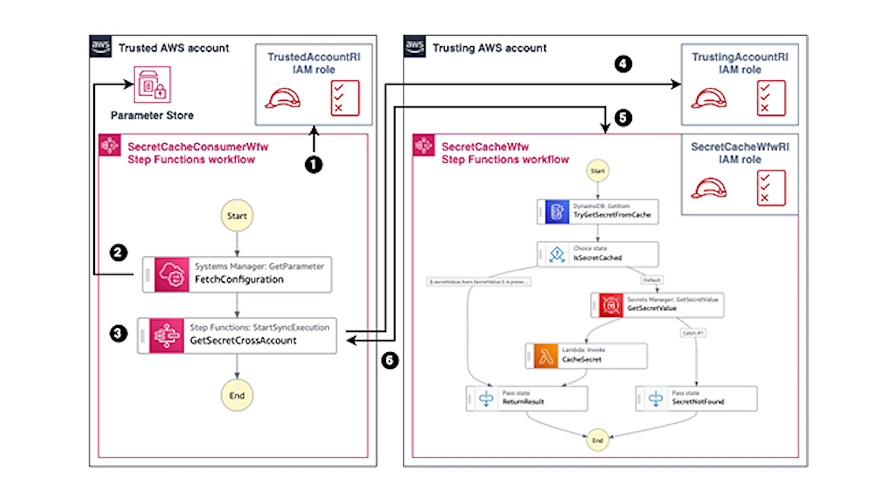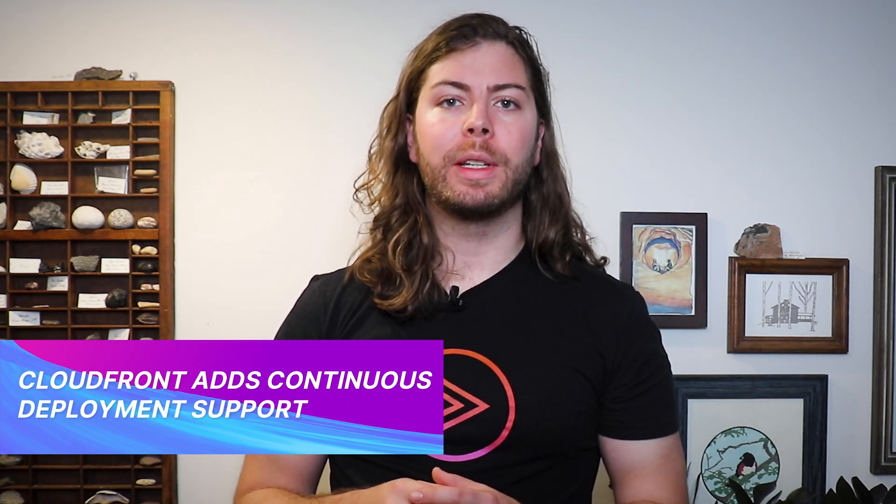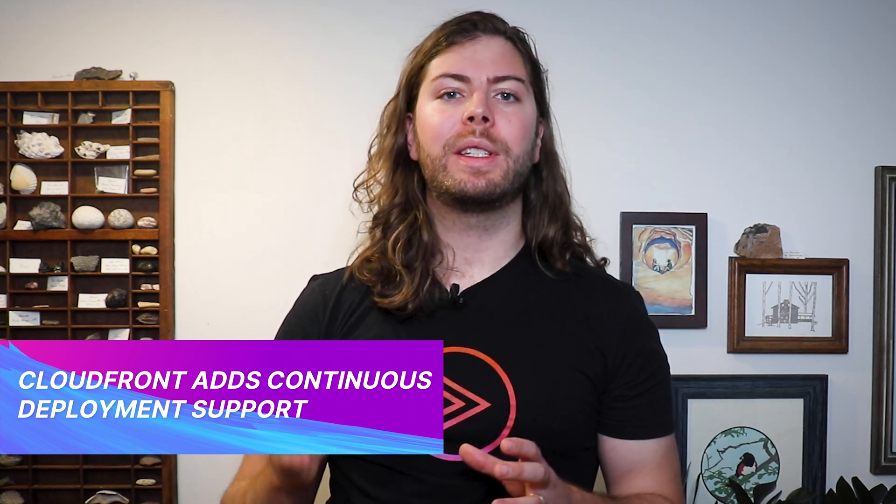With this new functionality, it will be easier than ever to use Step Functions' direct integrations with resources across multiple accounts. CloudFront is the AWS Content Delivery Network, or CDN, optimized to deliver and cache content to application users around the globe. This week, AWS announced continuous deployment support for CloudFront, which allows developers to stage CDN configuration changes and test them at scale using Blue-Green or Canary deployments.